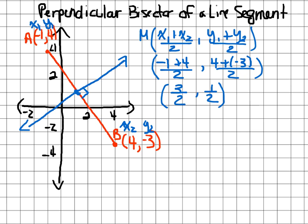So I have -1 + 4 = 3, giving 3/2, and 4 + (-3) = 1, giving 1/2. So the midpoint is (3/2, 1/2), which is about (1.5, 0.5). The true midpoint is around there on the graph.